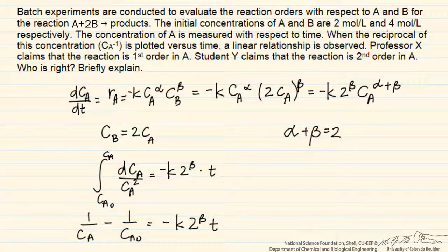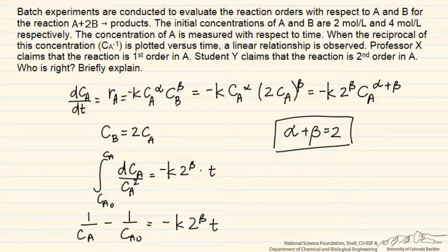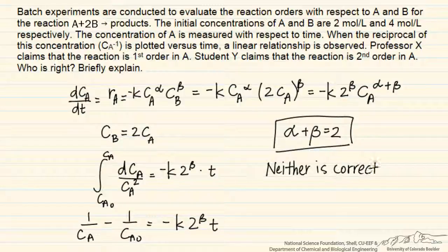This doesn't mean that we have an order with respect to A of 2. All it means is that the total order is 2, and we actually can't tell whether the order in A is 1, 2, 0, or some other number. We have to do another experiment where the starting material is not in the stoichiometric concentration ratio — for example, with one component in great excess — in order to determine the reaction order with respect to individual components. Right here, we can only determine the total reaction order.